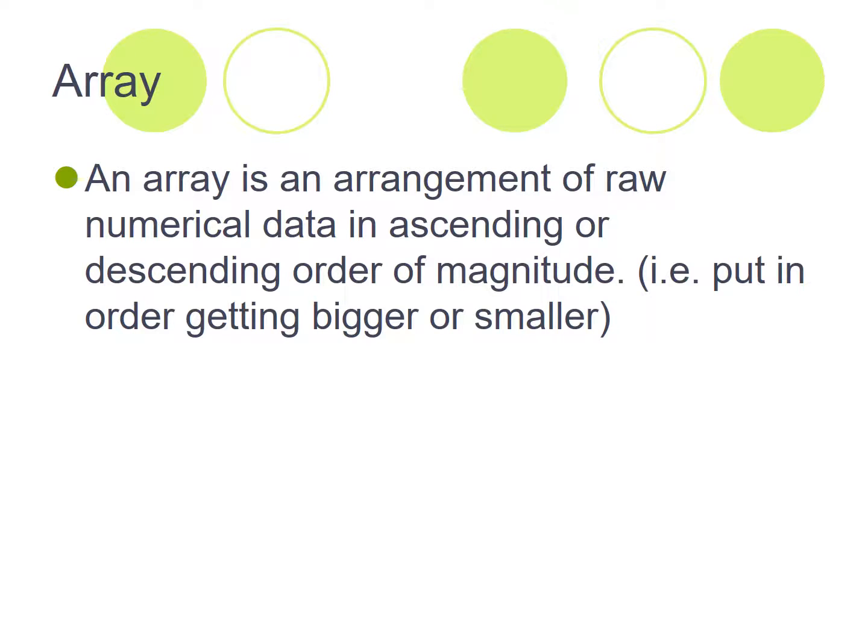Okay, what is an array? An array is an arrangement of raw numerical data in ascending or descending order of magnitude. So basically it's raw data that has been ordered, either getting smaller or larger.